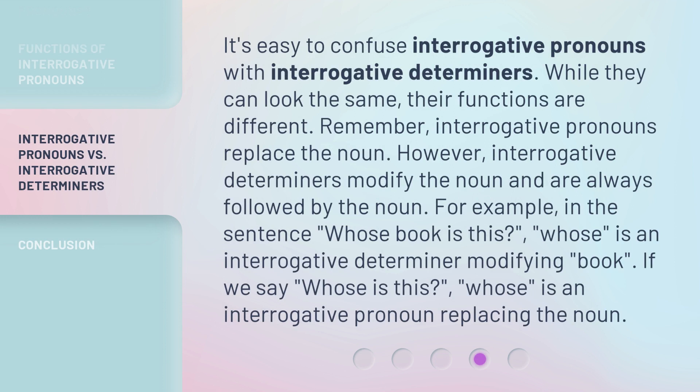It's easy to confuse interrogative pronouns with interrogative determiners. While they can look the same, their functions are different. Remember, interrogative pronouns replace the noun. However, interrogative determiners modify the noun and are always followed by the noun. For example, in the sentence 'Whose book is this?' — 'whose' is an interrogative determiner modifying 'book'. If we say 'Whose is this?' — 'whose' is an interrogative pronoun replacing the noun.